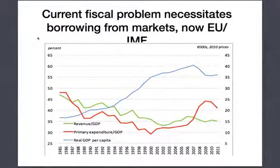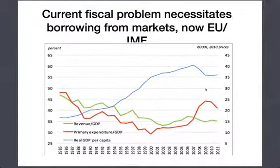You can see that the fiscal problem necessitates borrowing. The green line shows revenue as a percentage of GDP, and the red line shows primary expenditure as a percentage of GDP. After 2010, most of the drop is taking place on the expenditure side, which is what's combining to give us a sense of austerity. As the drop in government expenditure happens — combined with drops in consumption and investment — you can see real GDP per capita fall and then begin to tip up a little bit again.